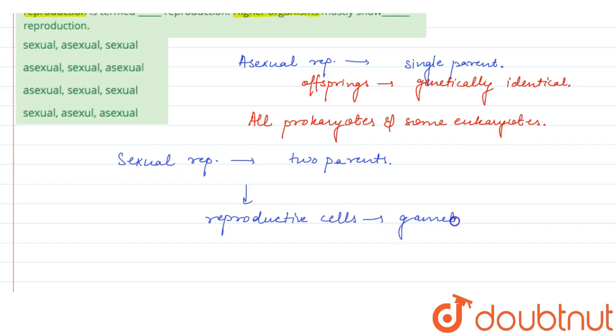And these gametes, they unite further to form an offspring.